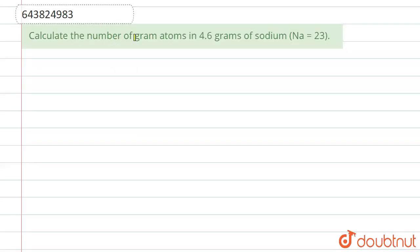Hello everyone. The question we have is: calculate the number of gram atoms in 4.6 grams of sodium. We are given that sodium has a molecular weight of 23, i.e., Na = 23. So we have to calculate the number of gram atoms in 4.6 grams of sodium.